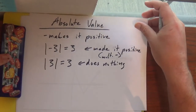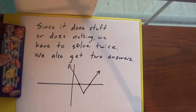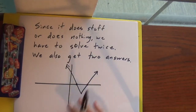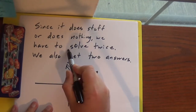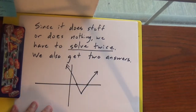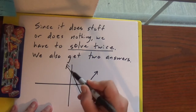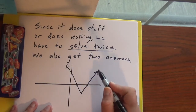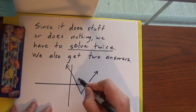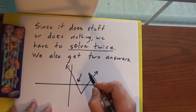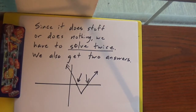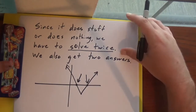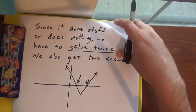Now since it does two things, that means that if we're going to solve it we have to solve it twice, because when I look at our graph it's going to look like this crazy V-shape thing, and that is a solution and that is a solution. So we have to solve it twice — it's not hard, it just means we have to do it twice.